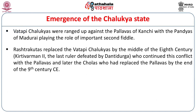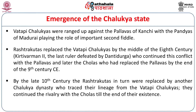When the Rashtrakutas replaced the Vatapi Chalukyans by the middle of the 8th century — with Kirtivarman II being the last Chalukyan ruler defeated by Dantidurga — this conflict with the Pallavas continued. Later, when the Cholas replaced the Pallavas in the Tamil Nadu region by the end of the 9th century, the Rashtrakutas and Cholas continued to fight. And when the Kalyani Chalukyans replaced the Rashtrakutas, the Kalyani Chalukyans continued to fight with the Cholas till the end of their existence.